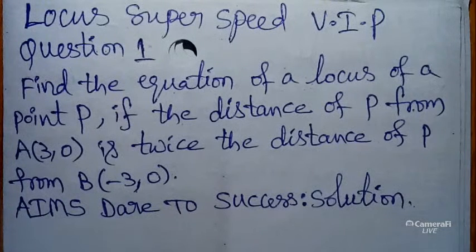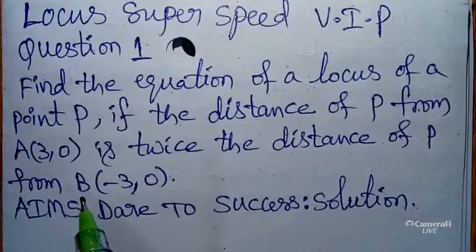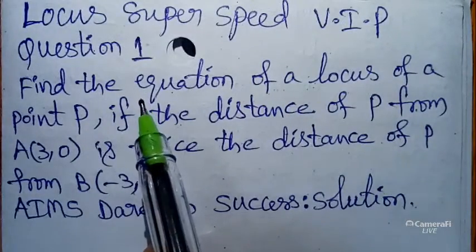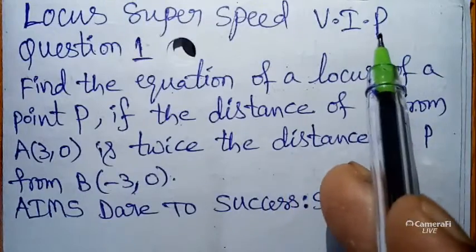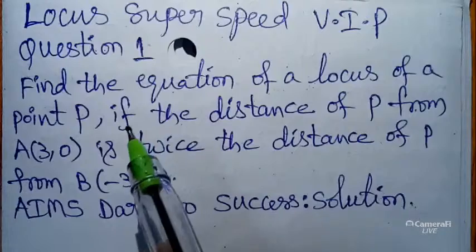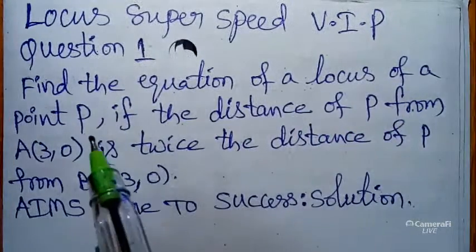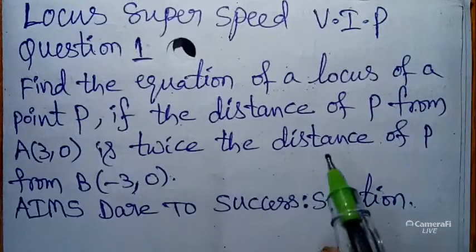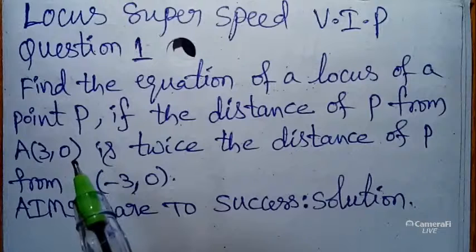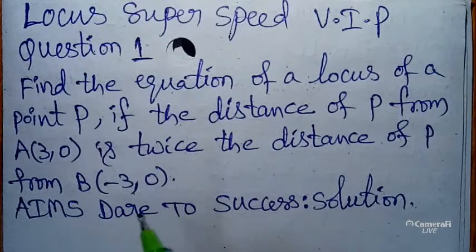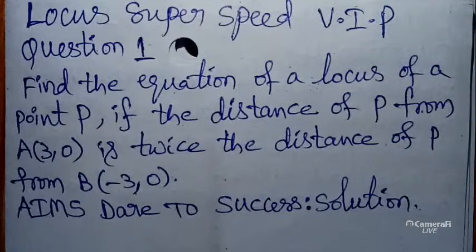Hi, hello, namaste my dear friends and students. Today I came with a new trick and a super speed VIP question — VIP means Very Important Previous question. Today our question is: find the equation of the locus of a point P if the distance of P from A(3, 0) is twice the distance of P from B(-3, 0). Aims There to Success.